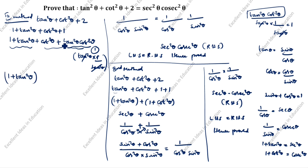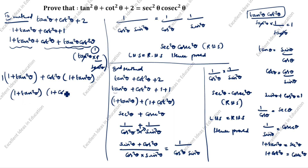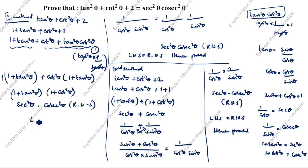We take (1 plus tan squared theta) as one pair and factor out cot squared theta from the remaining terms, giving cot squared theta times (1 plus tan squared theta). So we have (1 plus tan squared theta) into (1 plus cot squared theta). Now, 1 plus tan squared theta is secant squared theta, and 1 plus cot squared theta is cosecant squared theta. So LHS equals secant squared theta into cosecant squared theta, which is RHS — hence proved. This is the third method.